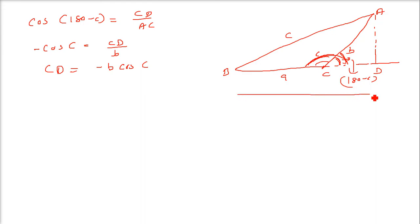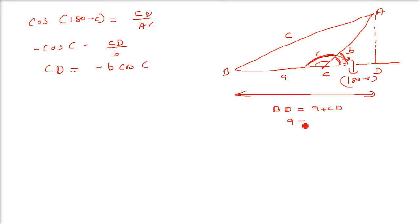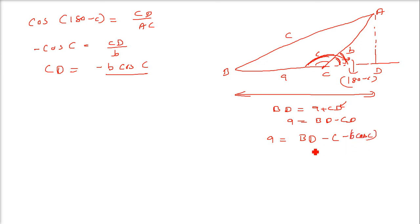Now, this whole length is BD. BD can be written as A plus CD. So A can be written as BD minus CD. What is CD? CD is minus b cosC. So A equals BD minus (minus b cosC), which gives A equals BD plus b cosC.